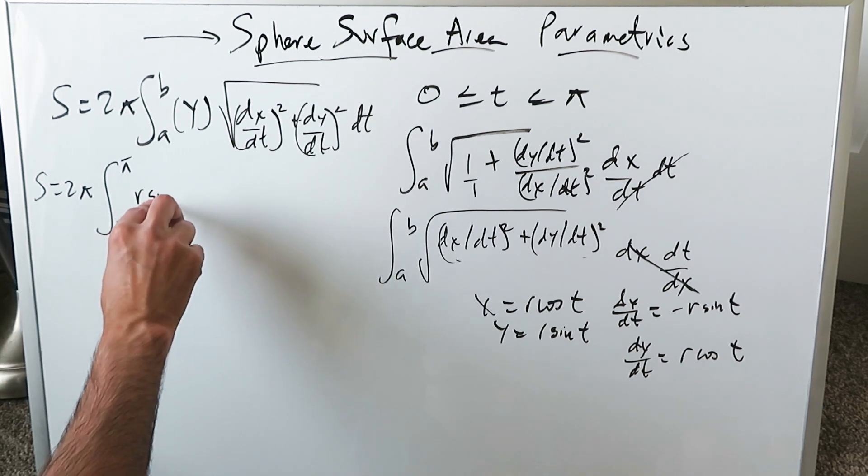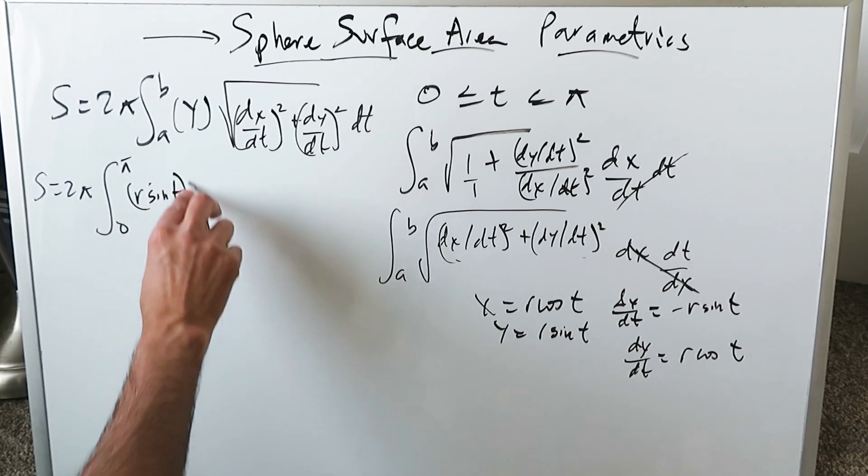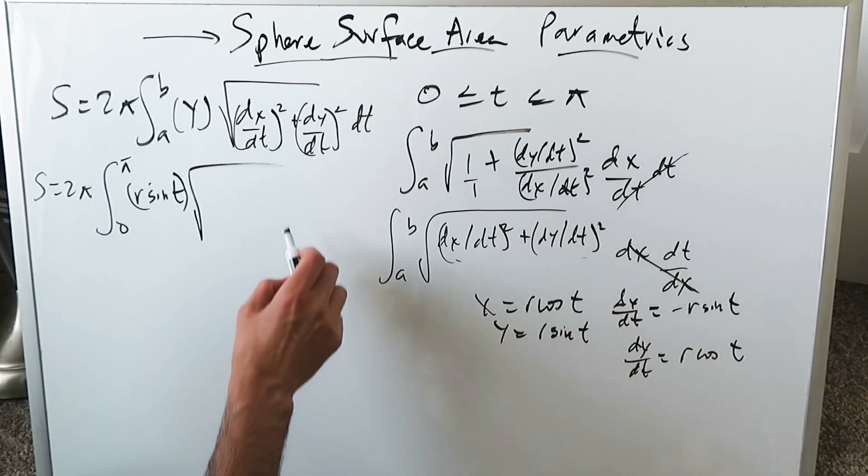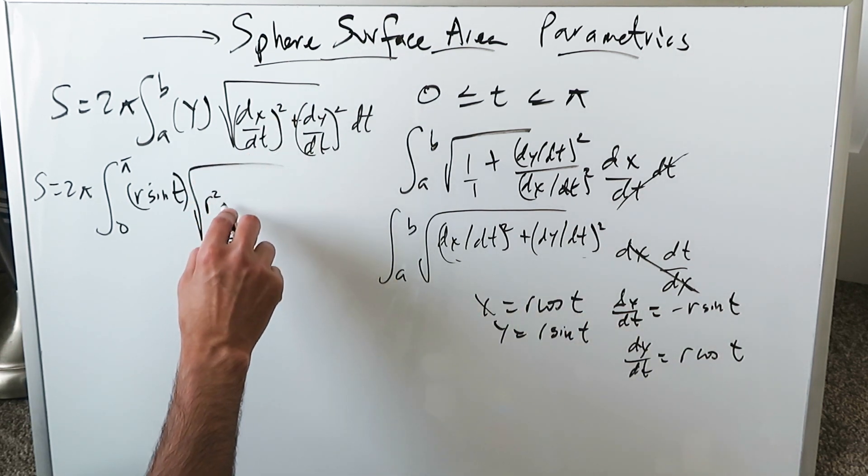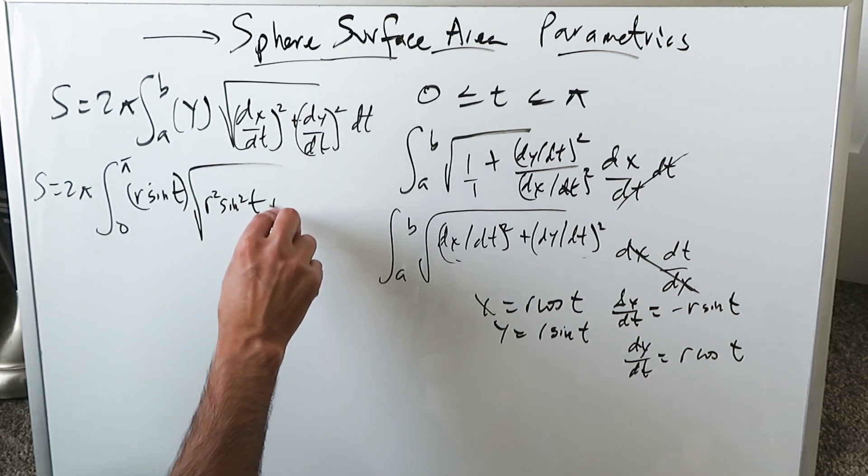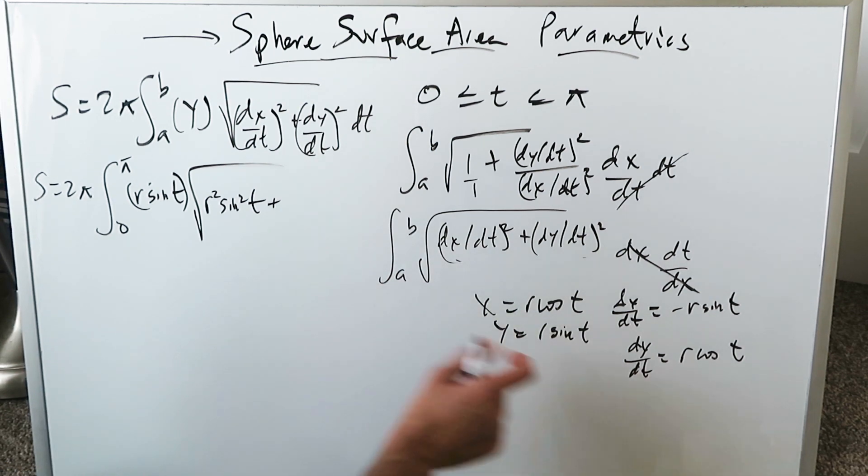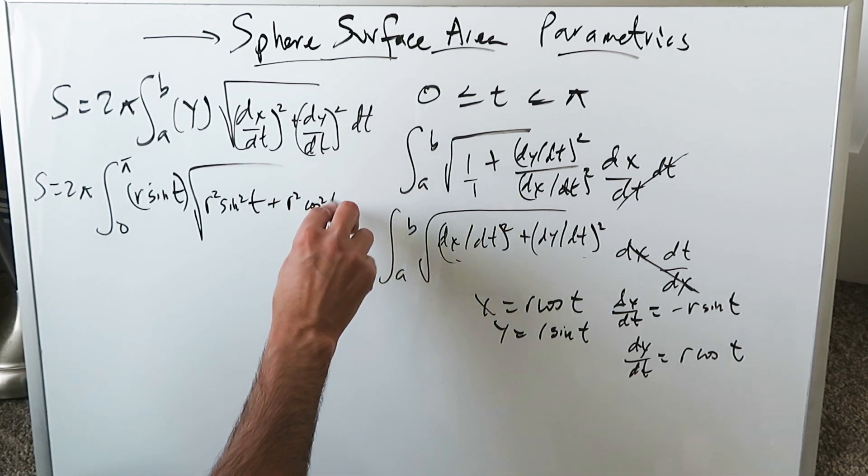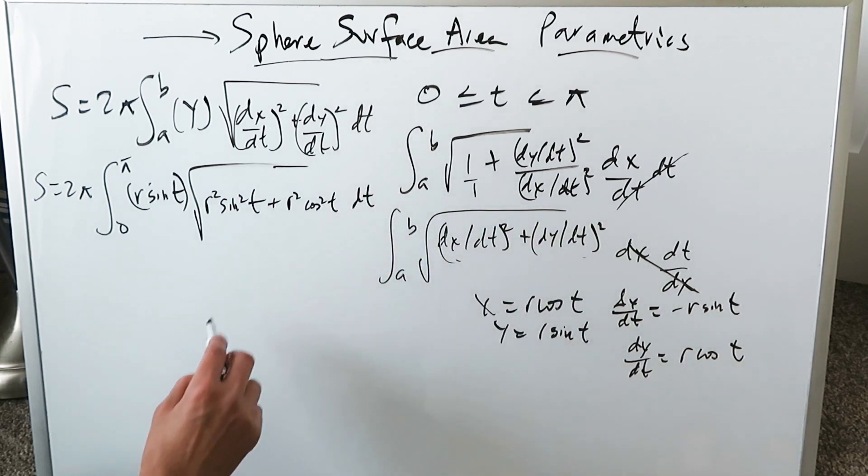y is r sin(t), and then have a square root. dx/dt was -r sin(t), but square of that is r² sin²(t). dy/dt is r cos(t), but the square of that is r² cos²(t), all with respect to dt.